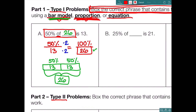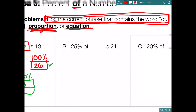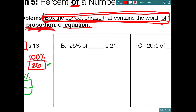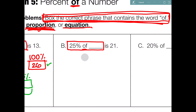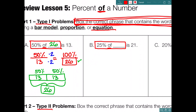Let's look at box B, also a type 1 problem: '25% of blank is 21.' Box the correct phrase — '25% of blank' — with 'of' in the middle. As before, 'of' means multiply, but I don't know what to multiply since I have 25% but don't know the other number. So I cannot do straight multiplication. Let's solve it using a proportion first, then check with a bar model.